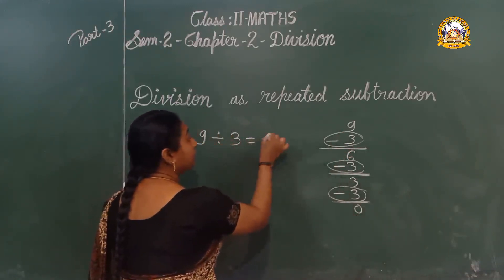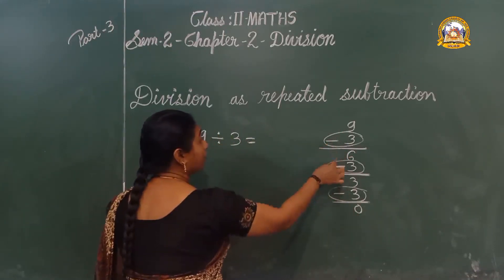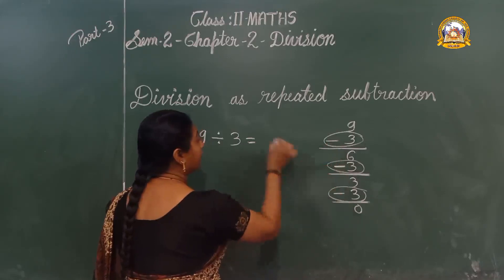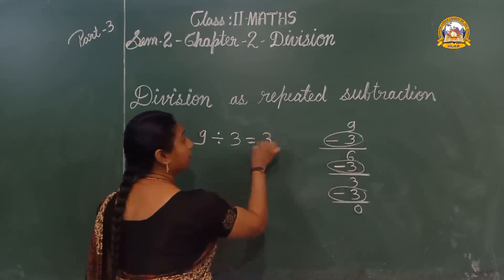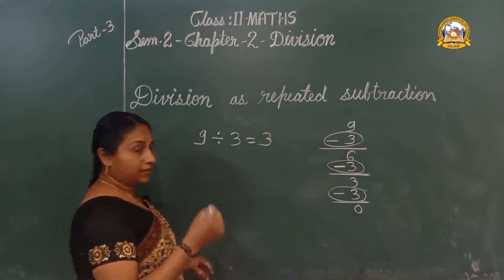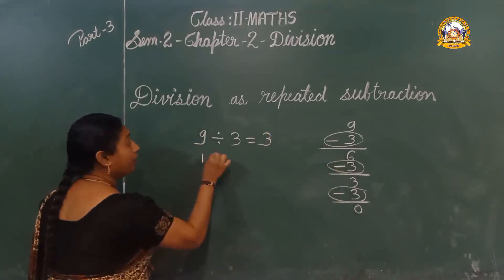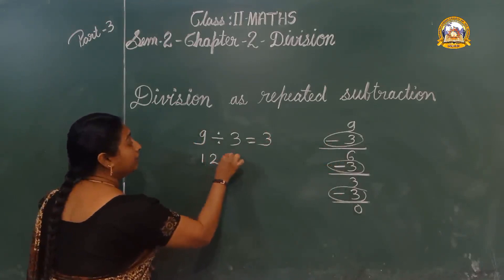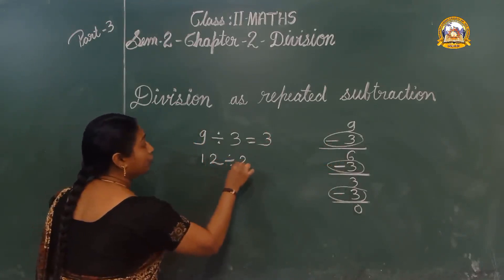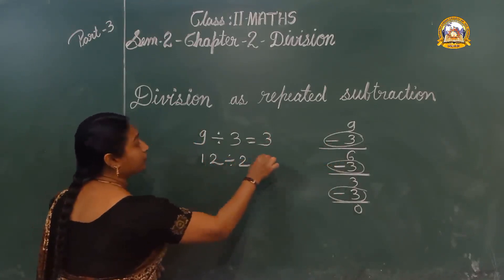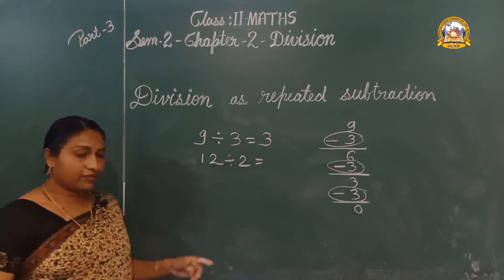Children, how many times did we subtract 3 to make 9 become 0? 1, 2, 3 times we subtracted 3 from 9 and got 0. So 9 divided by 3 is 3.